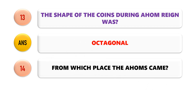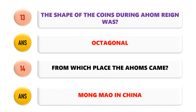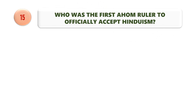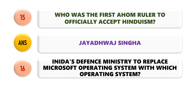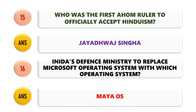Question No. 14: From which place did the Ahoms come? The Ahoms came from Meng Mao in China. Question No. 15: Who was the first Ahom ruler to officially accept Hinduism? The first Ahom ruler to officially accept Hinduism was Jayadwaj Sinha. Question No. 16: India's Defense Ministry replaced Microsoft operating system with which operating system? The answer is the Maya operating system.